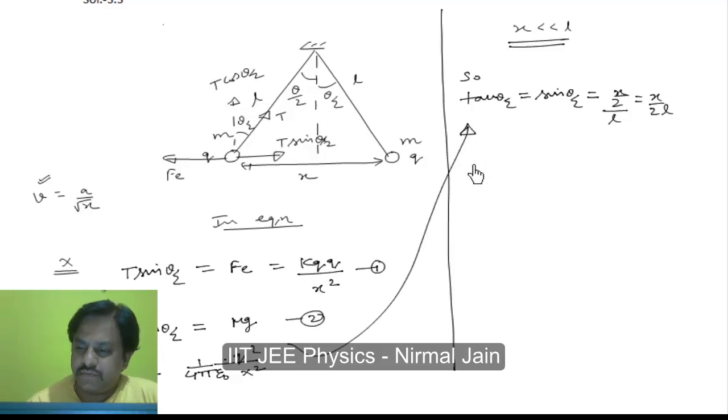X by 2 L is equal to 1 by 4 pi epsilon 0 q square by X square mg. So it comes out to be equal to X cube is equal to q square L by 2 pi epsilon 0 mg like this.